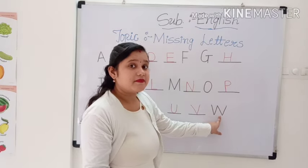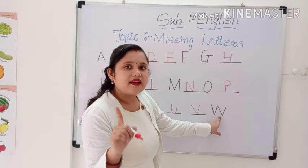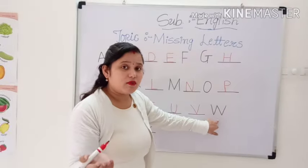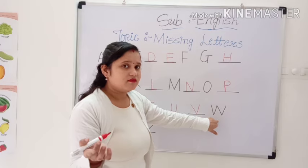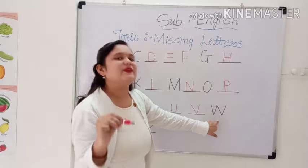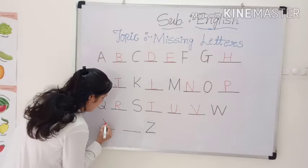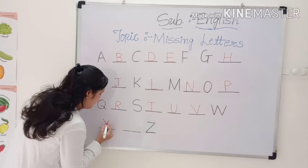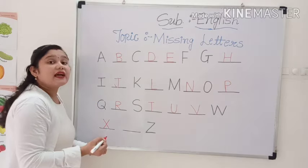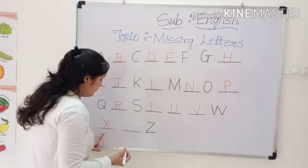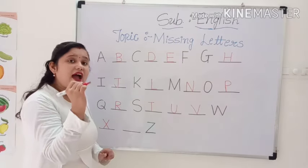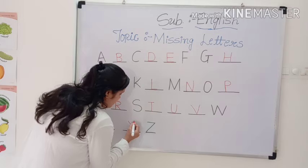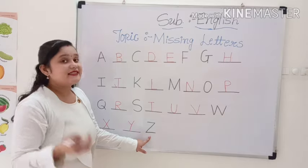Which letter is this? Capital letter W. Now, which letter comes after W? Do you know? Yes. Very good. X. Very good. And how can we make X? First, we make a slanting line. After that, draw another slanting line. Makes X. Now, which letter comes after X? Y. Capital letter Y.